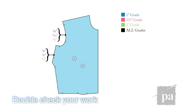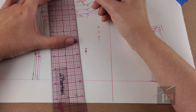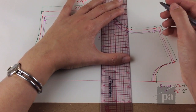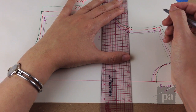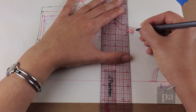Now one thing I didn't show you on the machine grading was checking your work. This is very important — before you go any further cutting your pattern or taking it off the machine, check your work and make sure you did it correctly because sometimes you can mess up. The way you check your work: for a one inch grade you have to have on the side seam a quarter; for the one and a half it's three eighths; and for the two inch it's a half an inch. For the armhole it's an eighth for the one inch, three sixteenths for the one and a half, and a quarter for the two inch grade.